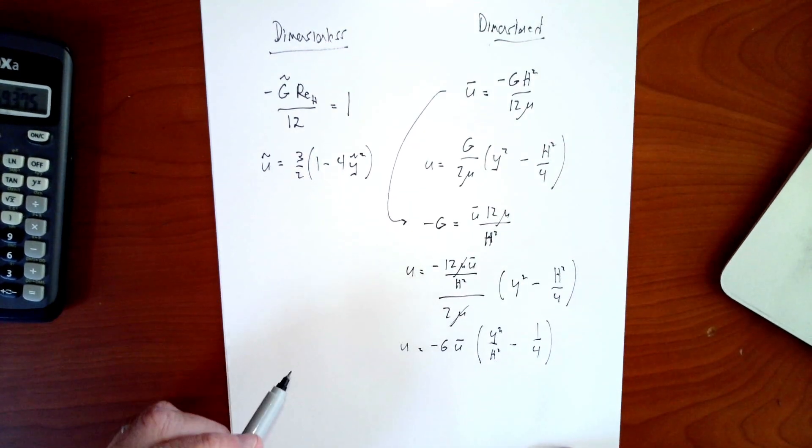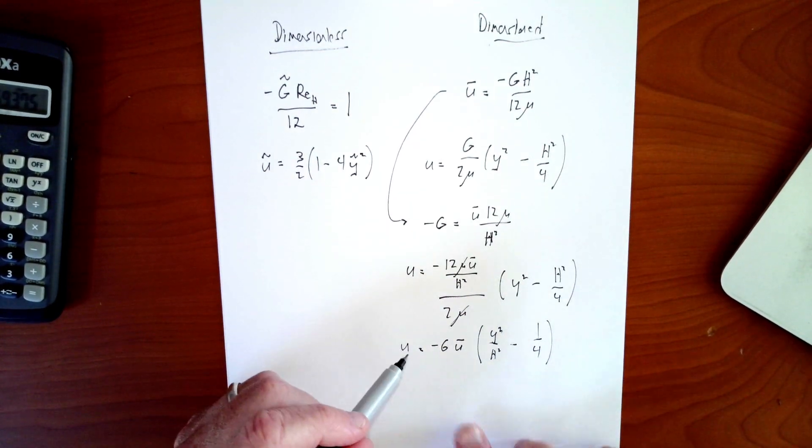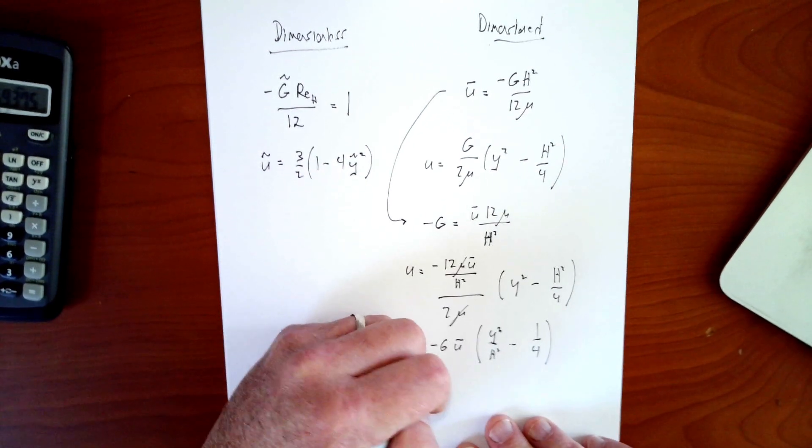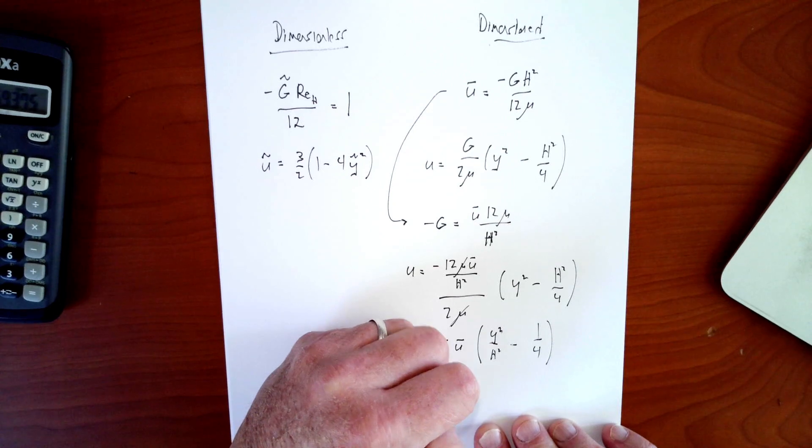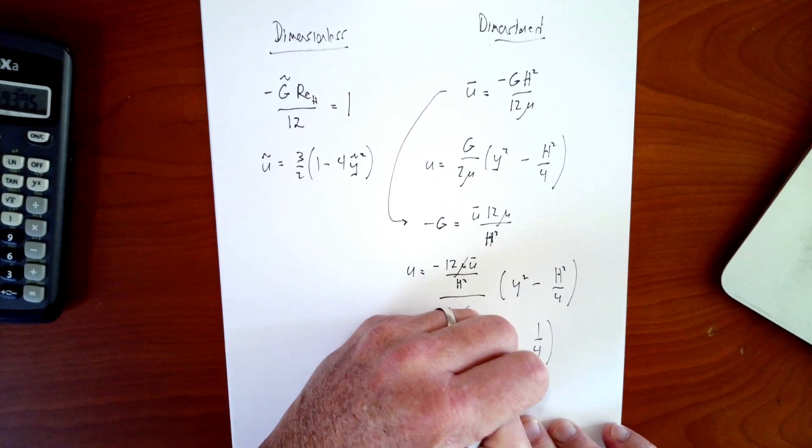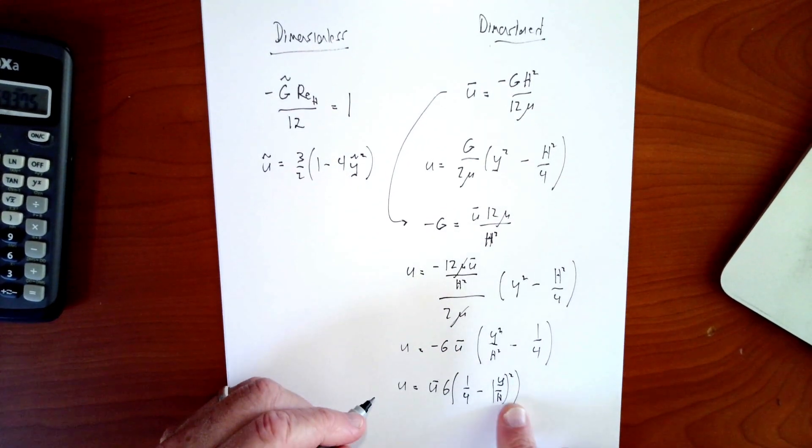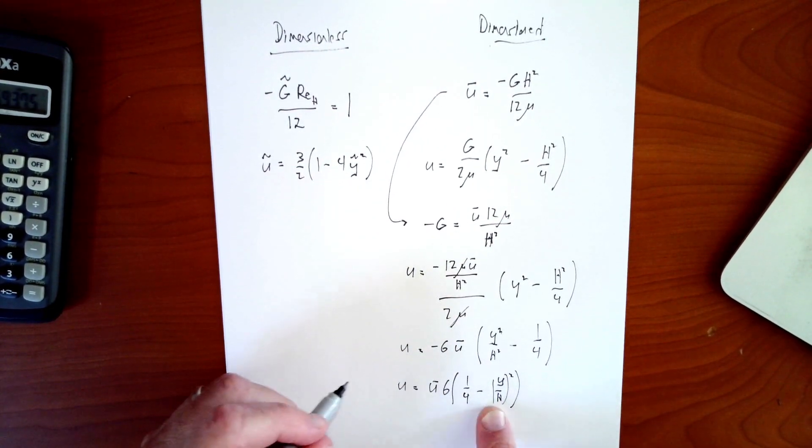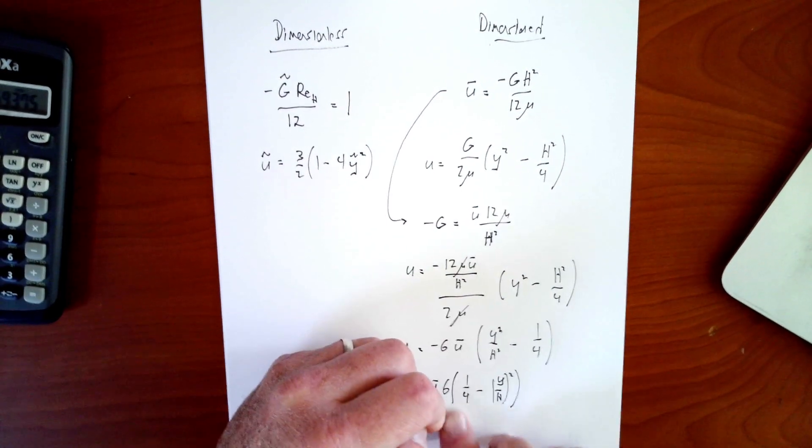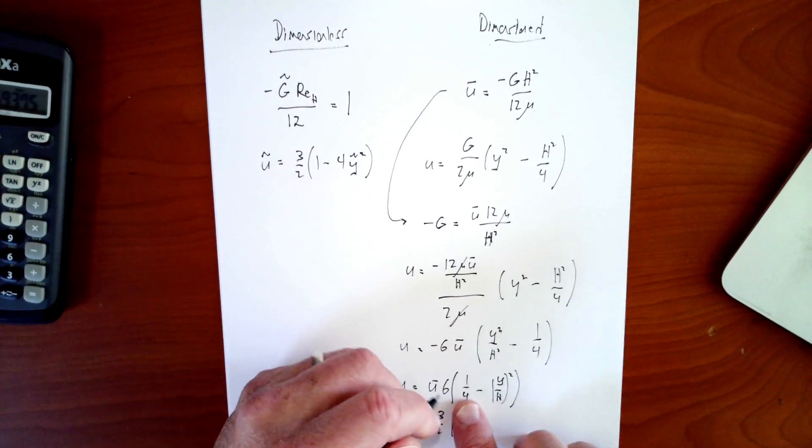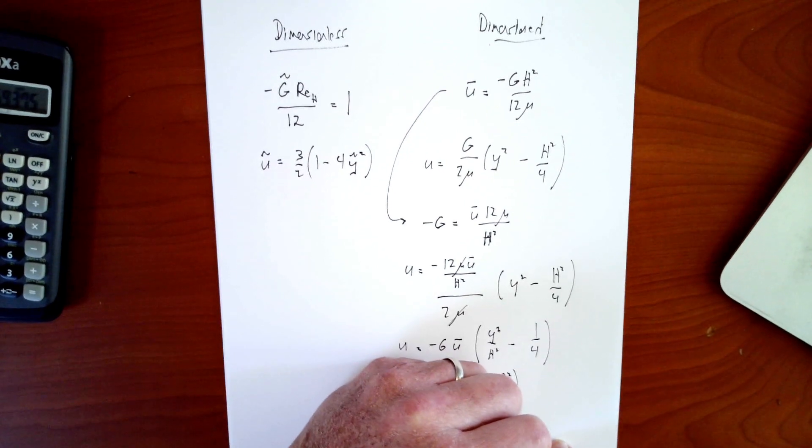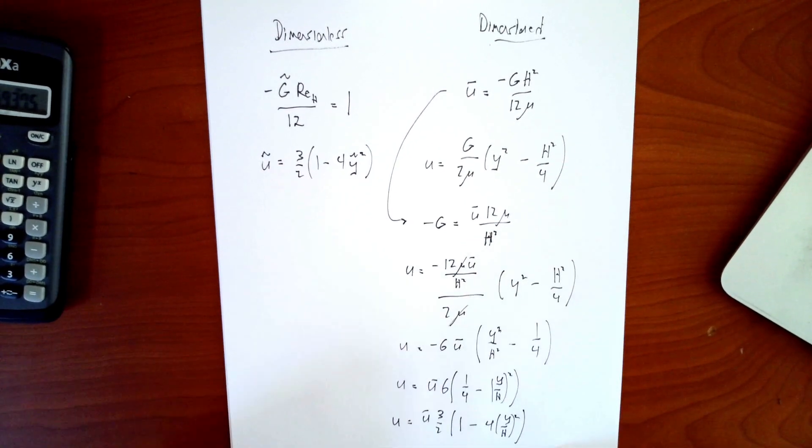Yep, that looks fine. And so then obviously, I want to flip the minus signs around a little bit. So I want u is equal to u bar times 6 times 1 over 4 minus y over h squared. And finally, I'm going to pull out a 4 from the denominator of this term. So I get u is equal to u bar 6 over 4 is 3 halves. I pull out a 4, that's a 1. And I pull out a 4, I got to put a 4 in front of it. So y over h squared. So it looks like that.